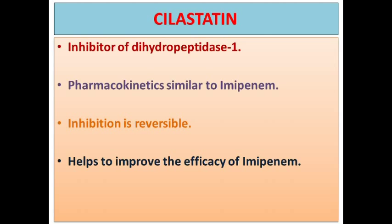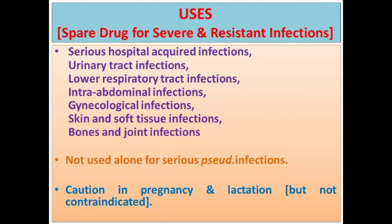Imipenem is resistant to the actions of most enzymes, making it a spare drug for reserve, severe, and resistant infections. Indications include serious hospital-acquired infections: respiratory, abdominal, gynaecological, soft tissue, bone and joint infections. This combination may not be the first choice, but if the infection is severe, life-threatening, or resistant, then you want to use this antibiotic.